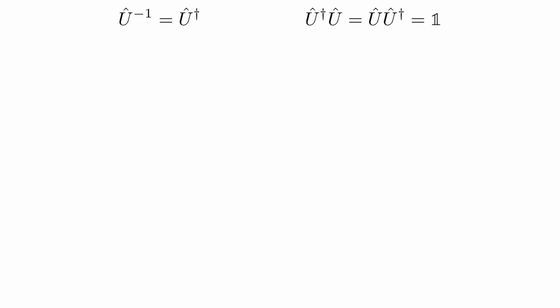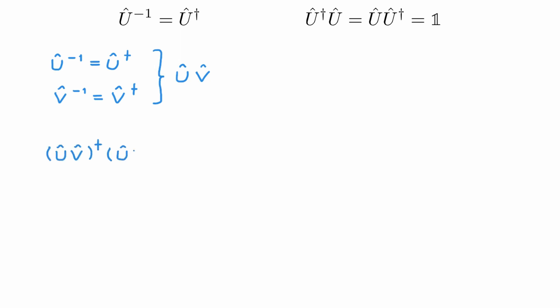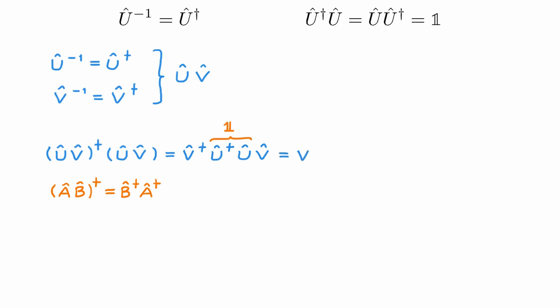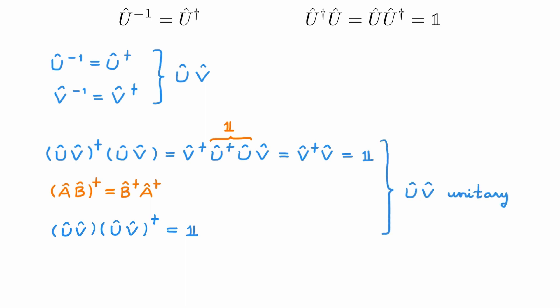The first property of unitary operators that we're going to look at is that the product of two unitary operators is also unitary. To see this, consider a unitary operator U, another unitary operator V, and the product UV. To check that UV is also unitary, we first consider (UV)† times UV. We know that the adjoint of a product of two operators is equal to the product of the adjoints in reverse order, and we get V†U†UV. As U is unitary, U†U is the identity, and we get V†V. And as V is unitary, this also gives the identity. We could similarly show that UV times (UV)† is also equal to the identity. Putting these results together, we see that UV is unitary, confirming that the product of two unitary operators is itself a unitary operator.